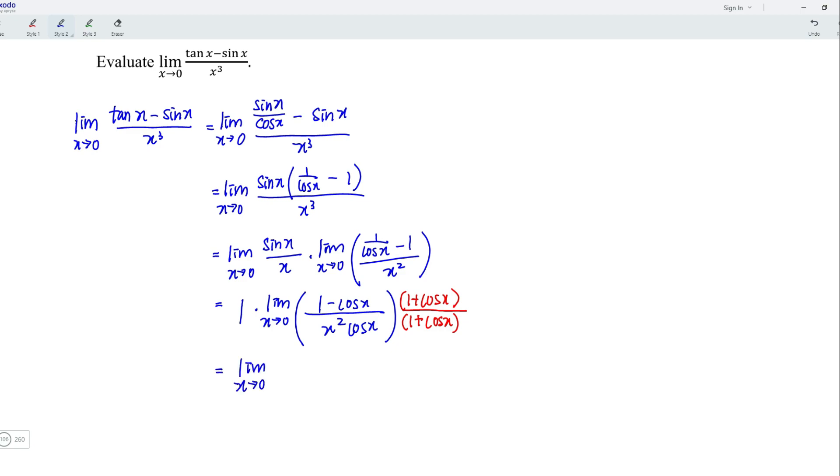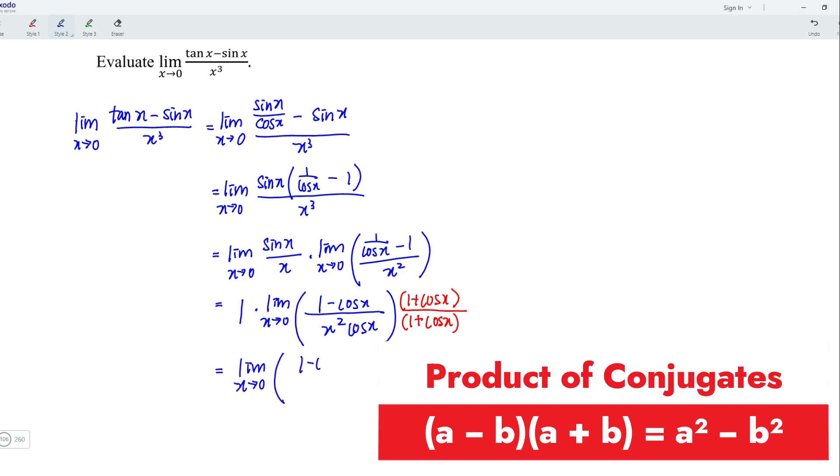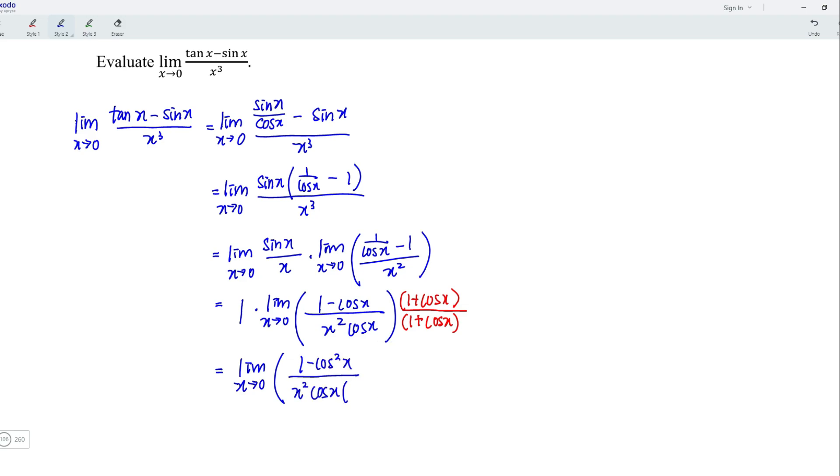When x approaches 0, for the function 1 minus cos squared x over x squared multiplied by cos x multiplied by 1 plus cos x.